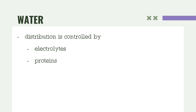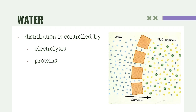You might wonder what the purpose is and why we are talking about water. The relationship is that your water distribution is greatly controlled by your electrolytes and proteins. Water movement greatly depends on the solute present in the body — this is an example of osmosis, where water moves from a low to a high concentration, while solutes move from higher to lower concentration.